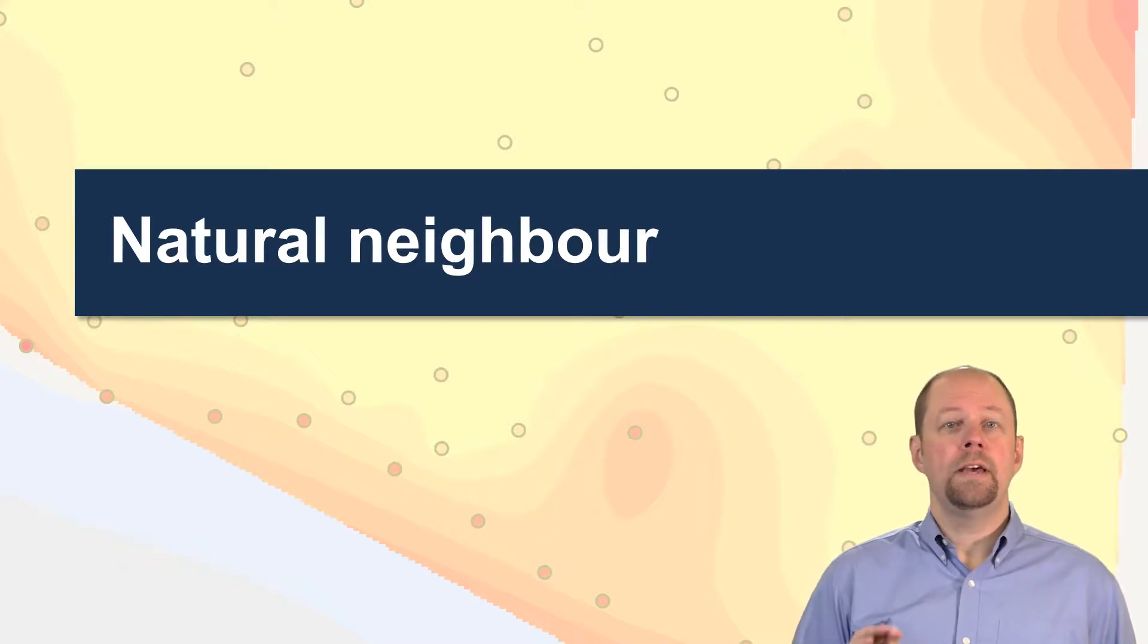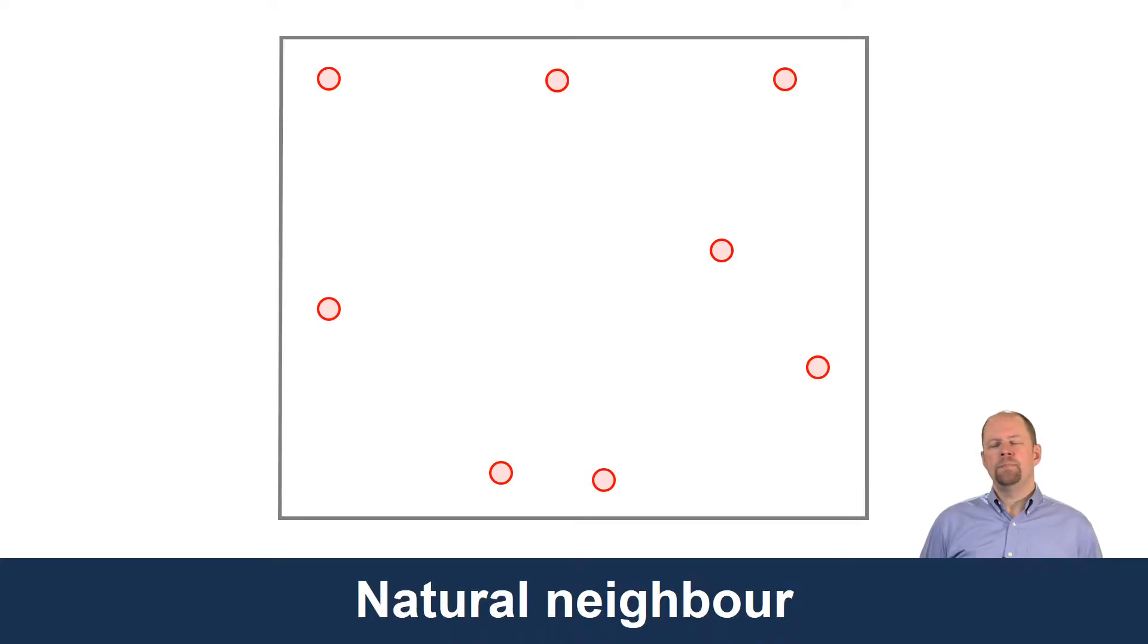Natural neighbor is a simple yet effective method for interpolating values to create a statistical surface. It's based on the same idea as Thiessen polygons, but takes it one step further.